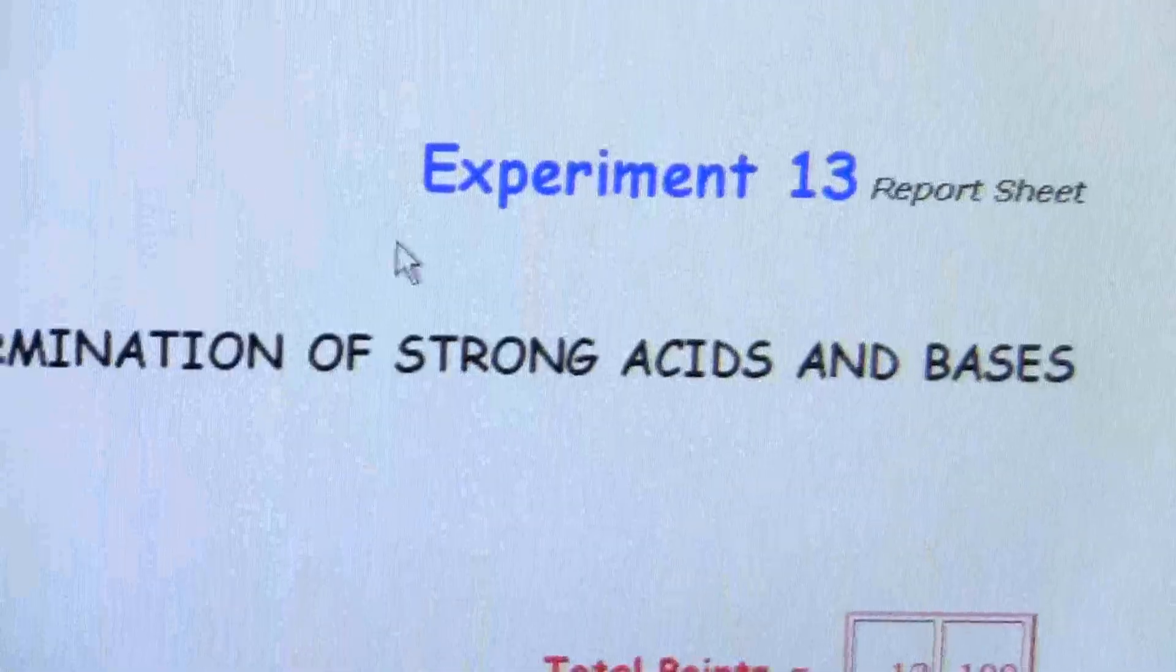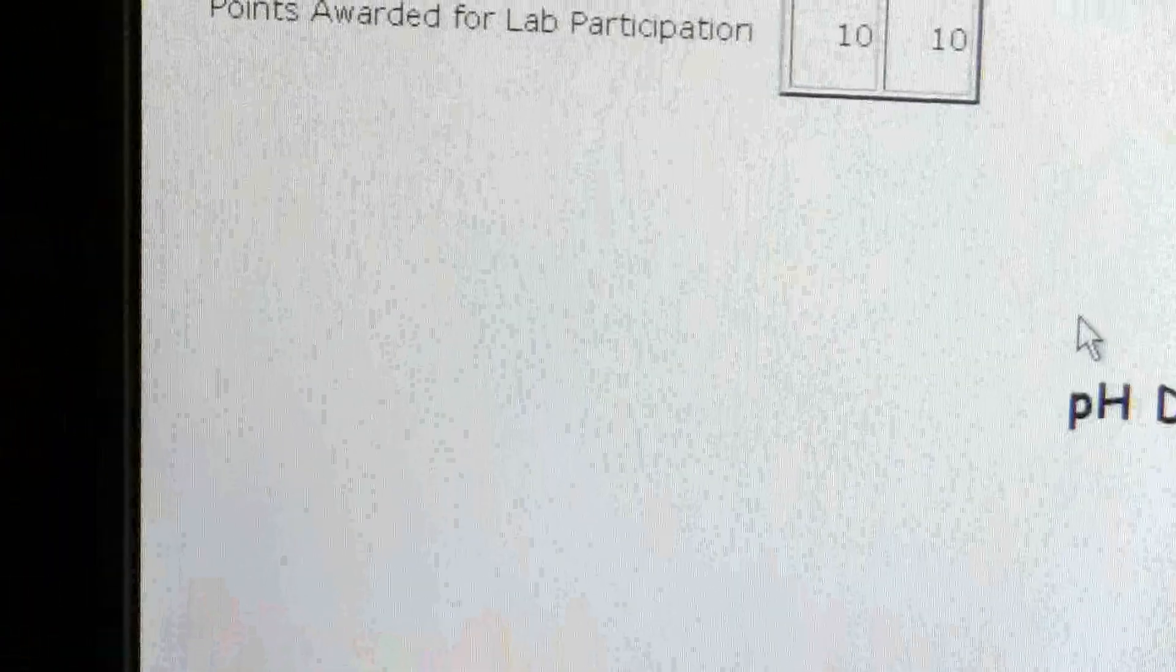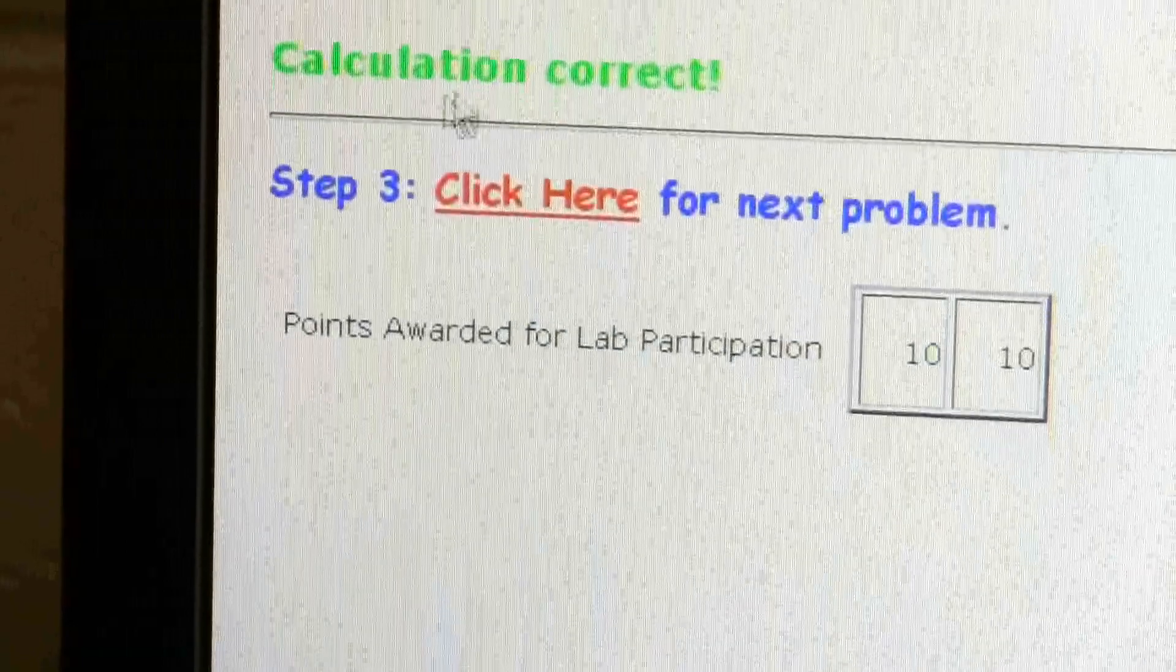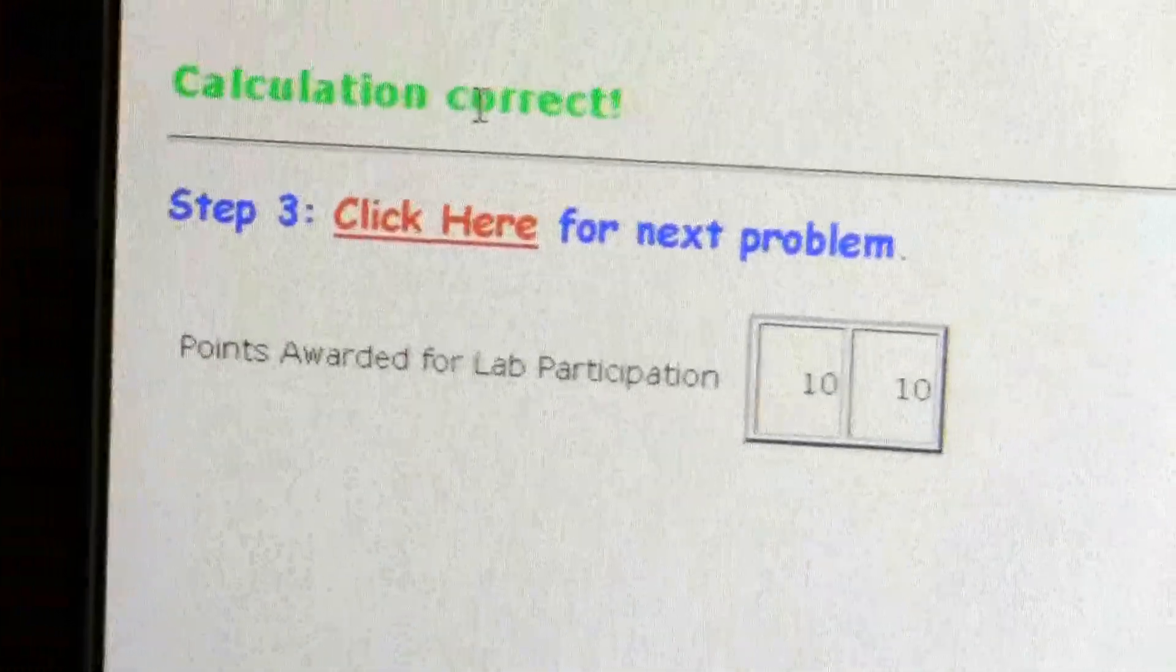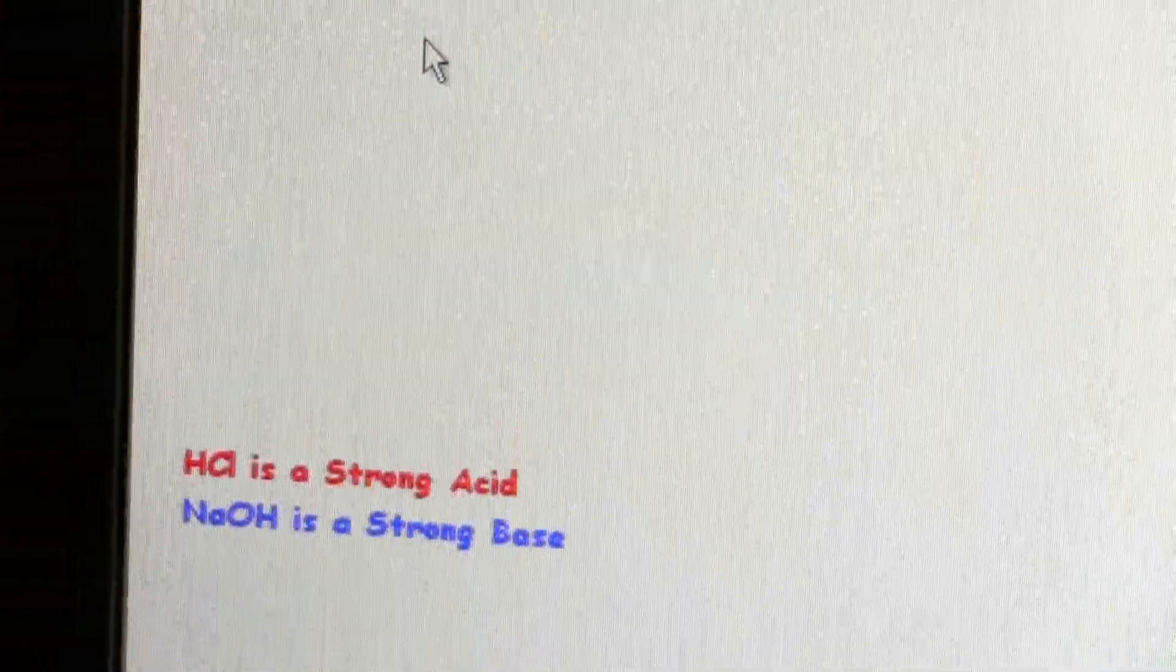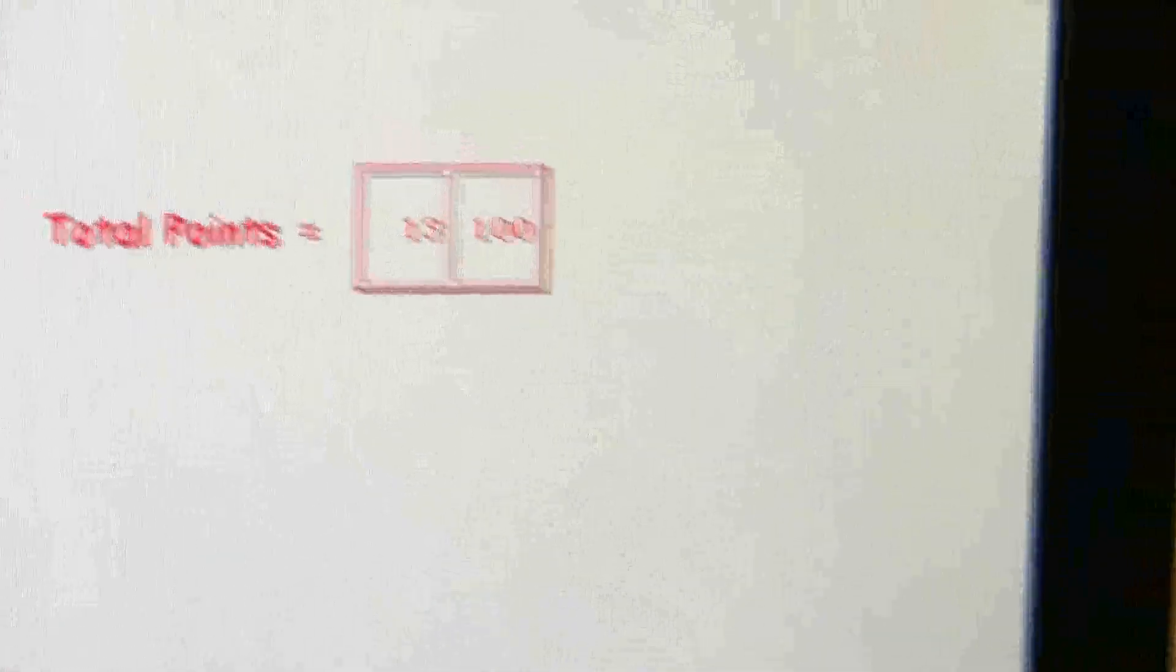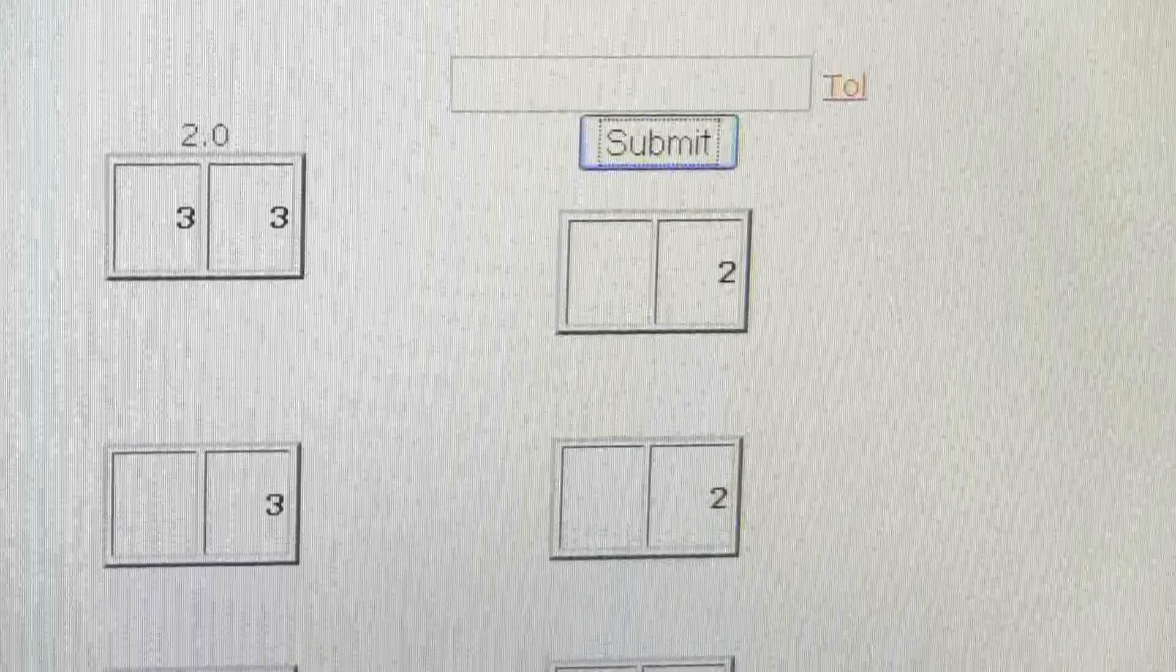Put it in 2. So click on submit or I press enter and it does it automatically. And you'll notice over here it says calculation correct. So I can just click on this little link, click here for the next problem. And then it takes me to the next field there.